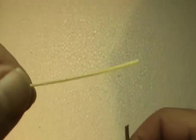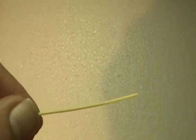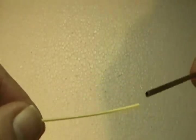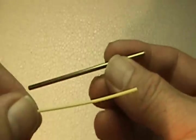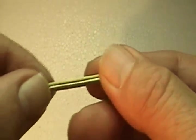We're going to do a nail knot using a tube. What we're going to do is attach a piece of monofilament to the end of our fly line. Taking the tube, I'm going to lay it parallel to my fly line.